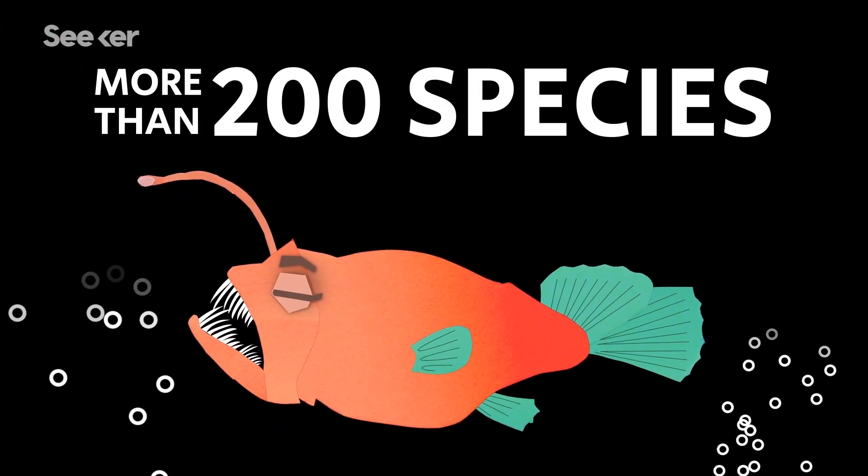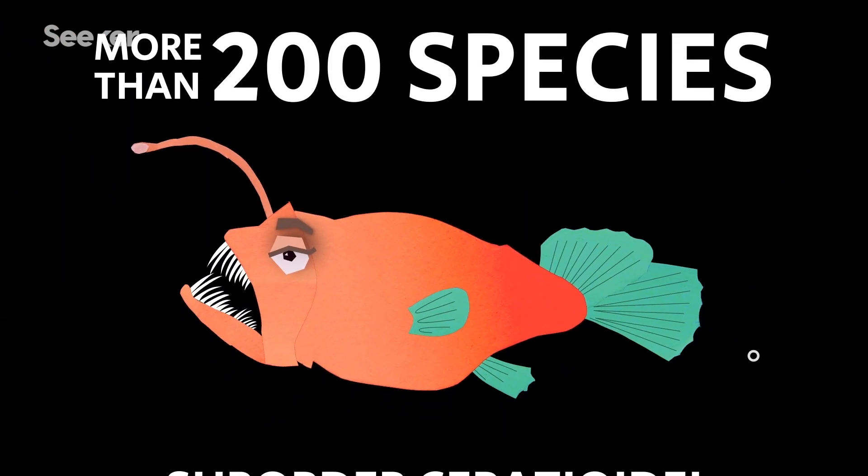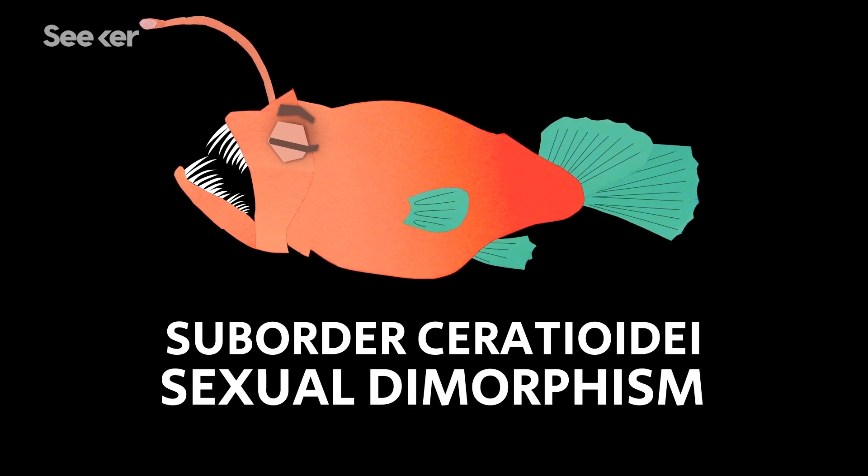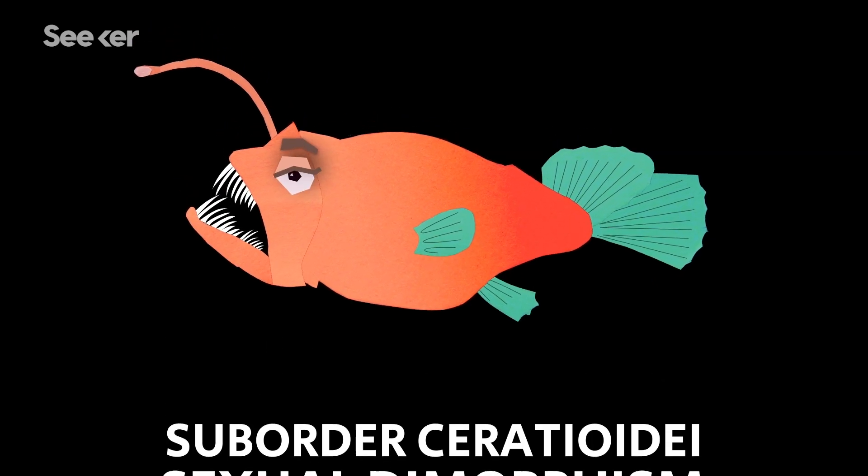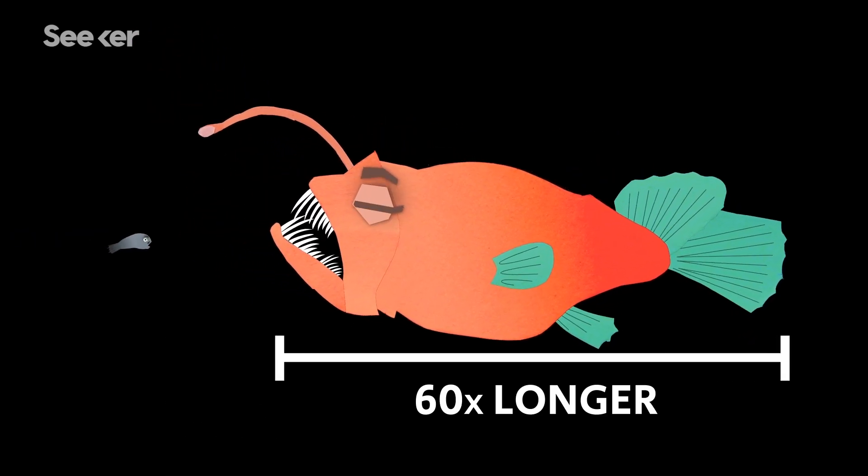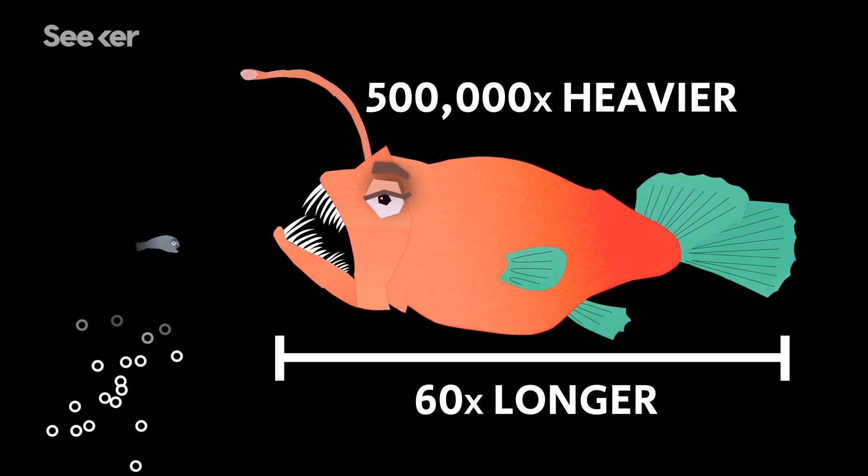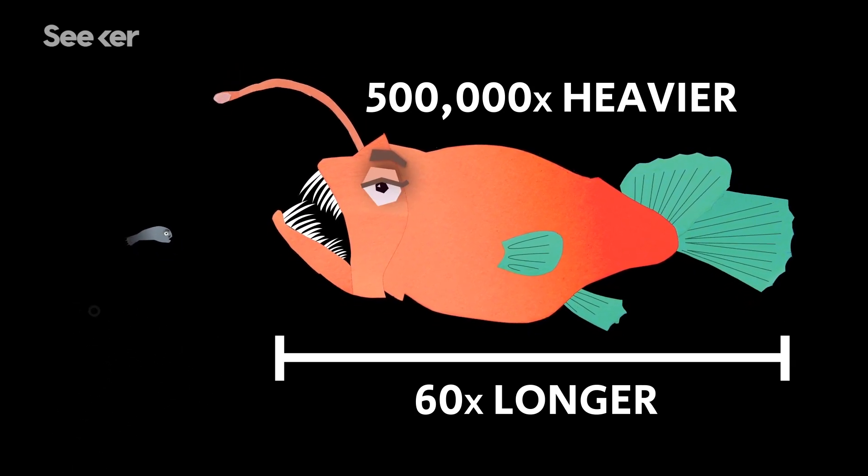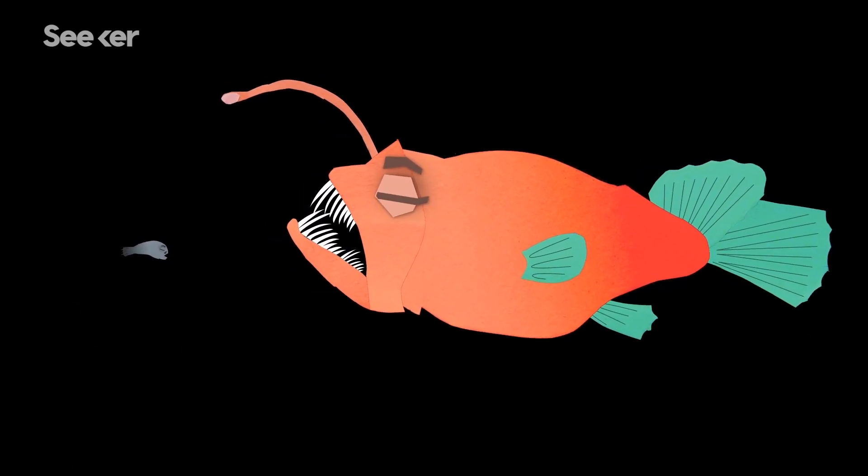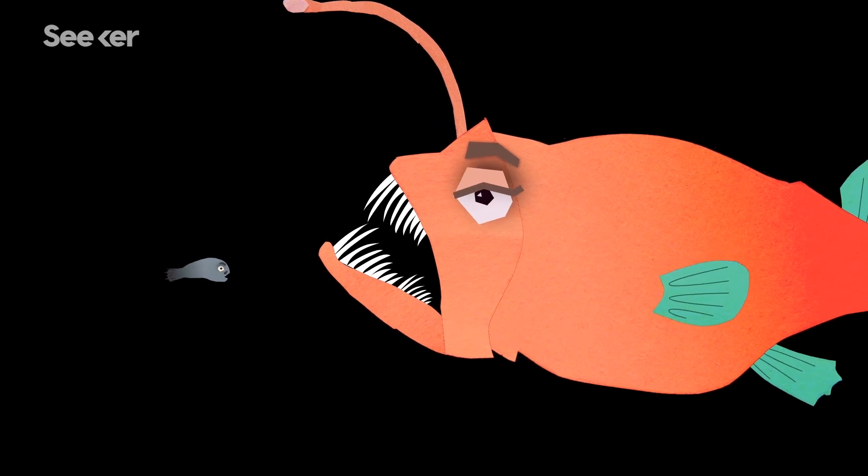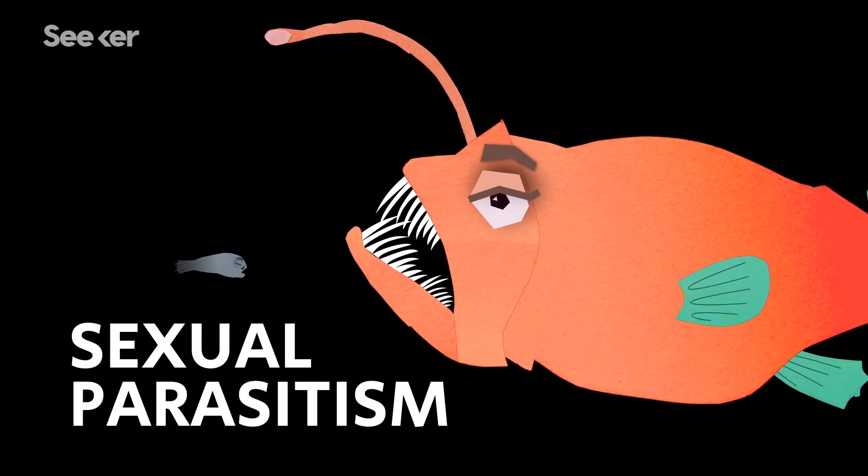There are more than 200 species of anglerfish, and some suborders show extreme sexual dimorphism, meaning females can be up to 60 times longer and half a million times heavier than males. Their size difference makes them ideal candidates for a bizarre phenomenon known as sexual parasitism.